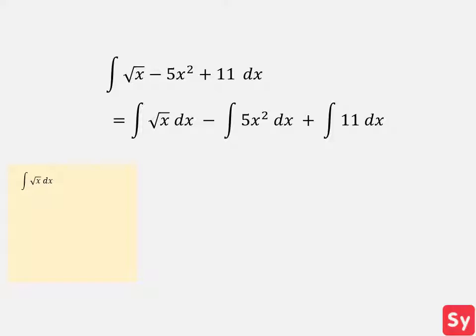First we'll solve the integral of the square root of x. We can rewrite this as the integral of x to the 1 half. And now we can see that it's a power function, so we'll go ahead and use the power rule. This simplifies to 2 thirds times x to the 3 half plus c.